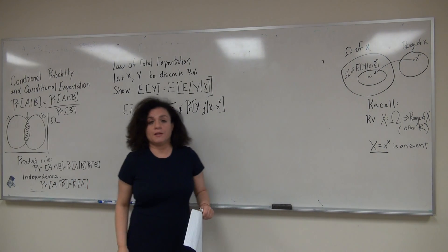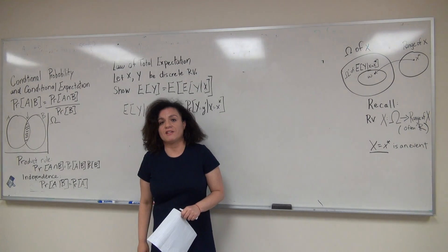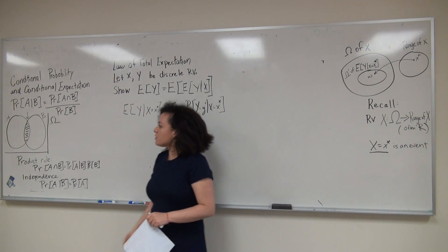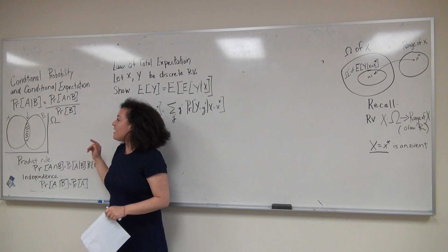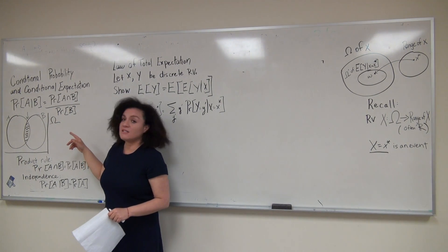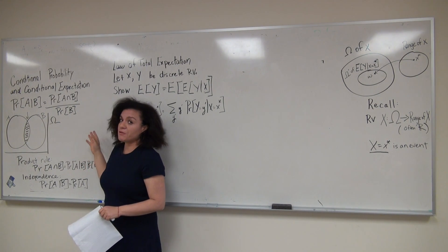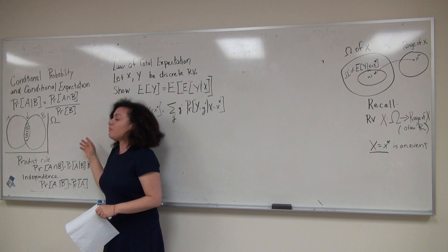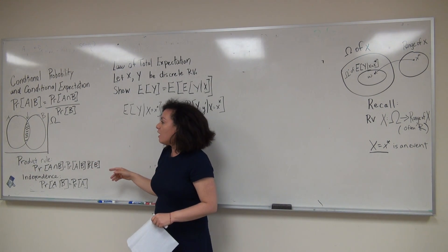This is a review video of conditional probability and conditional expectation. The conditional probability of event A given event B is equal to the probability of the intersection of events A and B divided by the probability of event B.